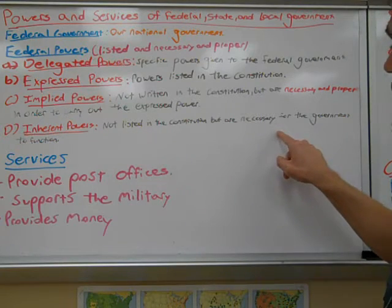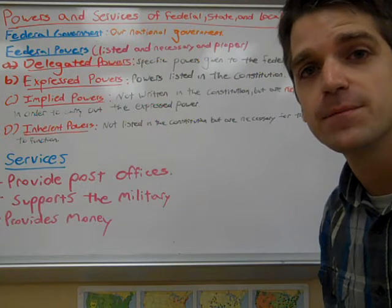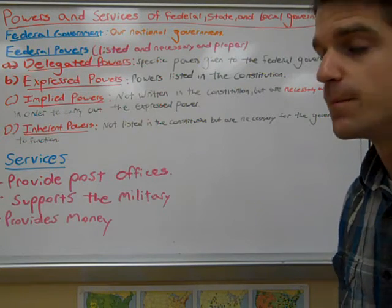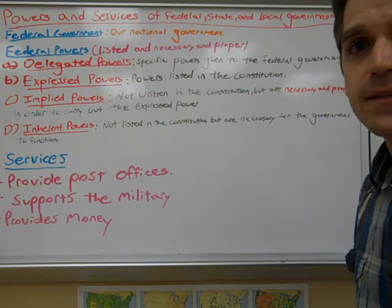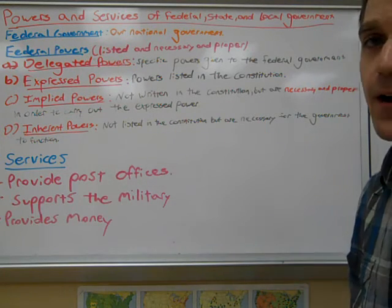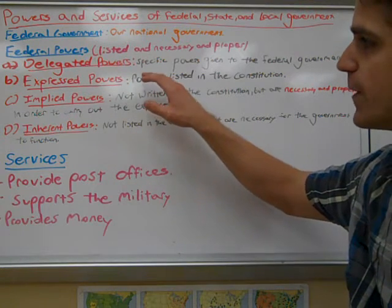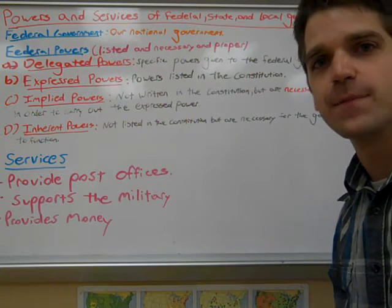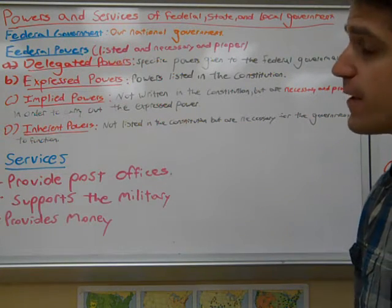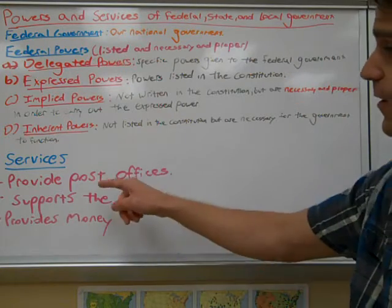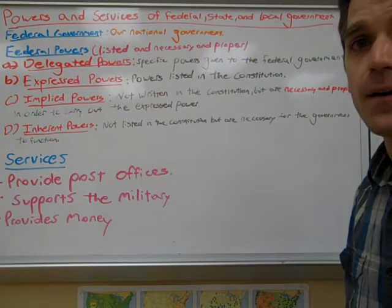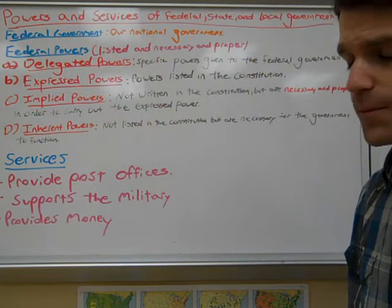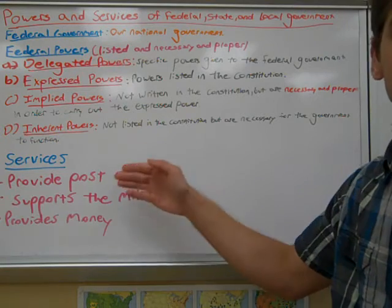Inherent powers are not listed in the Constitution but are necessary for the government to function. For example, the post office is an express power, but cutting delivery back to Saturdays would be an inherent power — things that help the express or implied powers function. Some examples of federal services include post offices, supporting the military, providing money, welfare programs, defending the nation, and ensuring civil liberties.